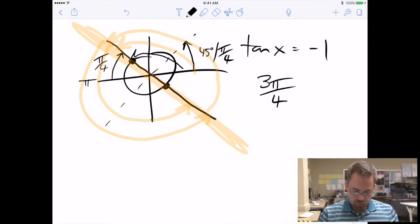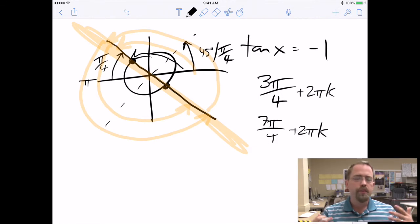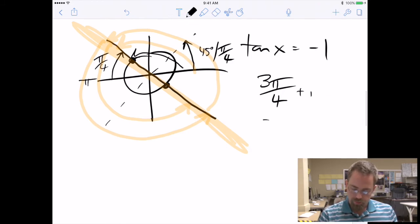So it is technically true that if you wanted to do 3 pi over 4 and 7 pi over 4, both of them plus 2 pi k plus 2 pi k. That is technically true, but it's a waste. Why say that the pattern repeats every 2 pi when there's an easier pattern that repeats every pi? So all we have to say for tangent is plus pi k.